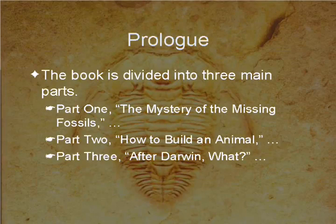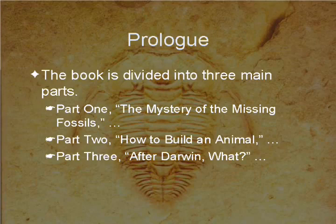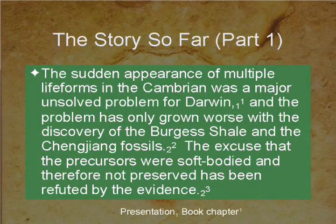Darwin's Doubt is divided into three main parts: the mystery of the missing fossils and the Cambrian explosion itself; how to build an animal and the problem of information being critical to the Cambrian explosion; and then Part 3, after Darwin — what? The sudden appearance of multiple life forms in the Cambrian was a major unsolved problem for Darwin himself, and the problem has only grown worse with the discovery of the Burgess Shale.